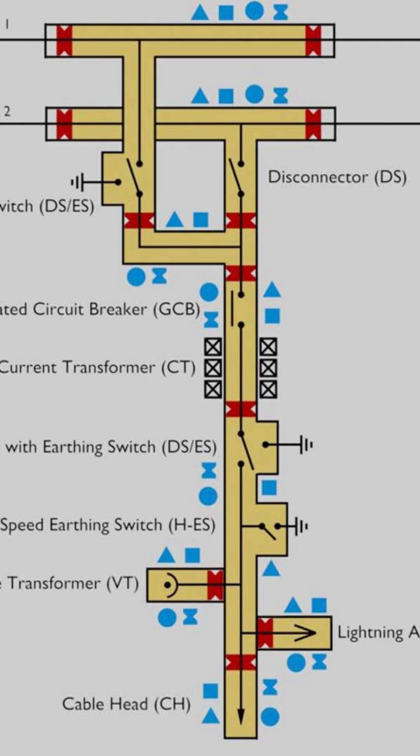This is a layout of a bay of a gas-insulated substation. From here up to here is one gas-tight compartment. This is the gas-tight barrier, this is the gas-tight barrier, and this is another gas-tight barrier.